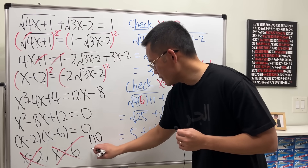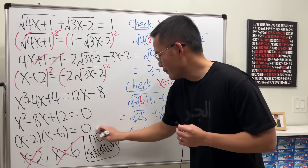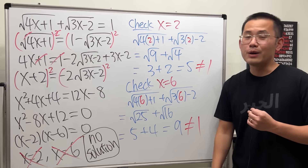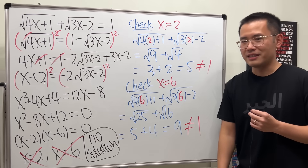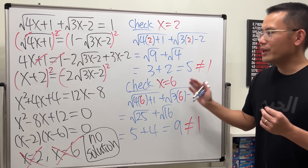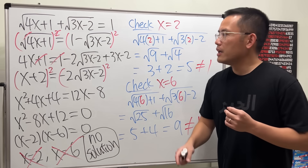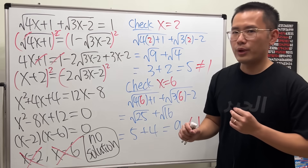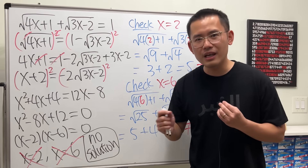No solution — surprise, surprise! I actually designed this equation intentionally. I'll show you how to construct an equation like this later. But first, let's talk about why we end up with fake answers, also known as extraneous solutions. The reason is: whenever we square both sides of an equation, you have to watch out and be careful.